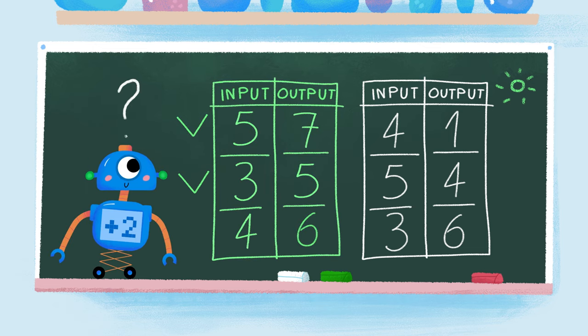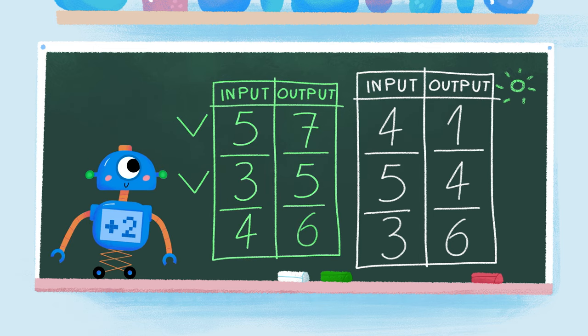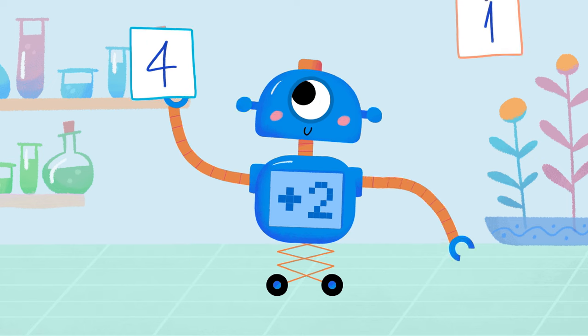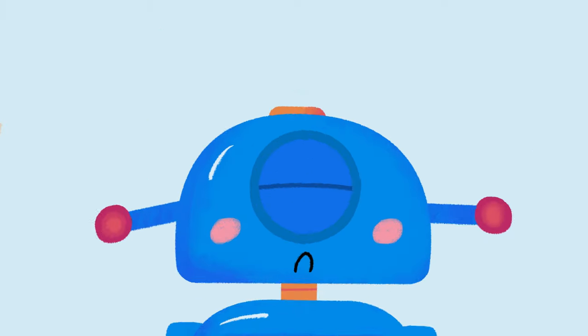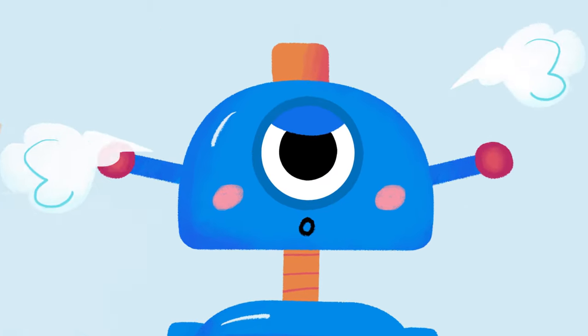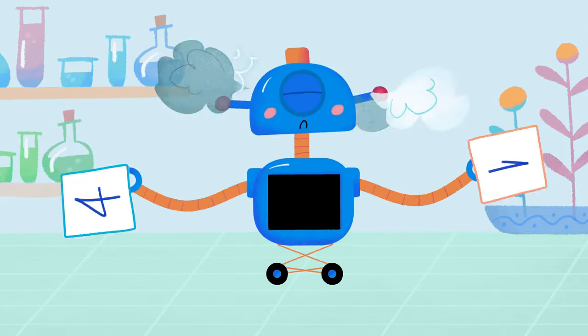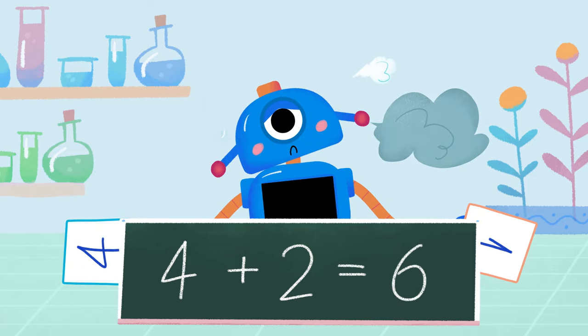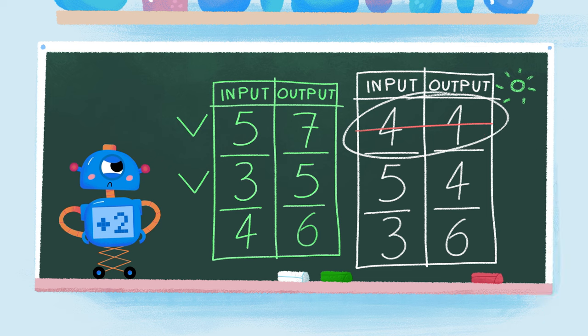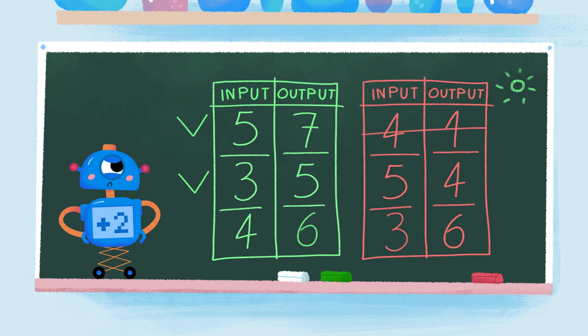Will the plus two rule work for the other table? Let's see. Four goes in and one should come out. If four goes in and the robot adds two, then six should be the output, not one. So the plus two rule can't unlock the equation in this table.